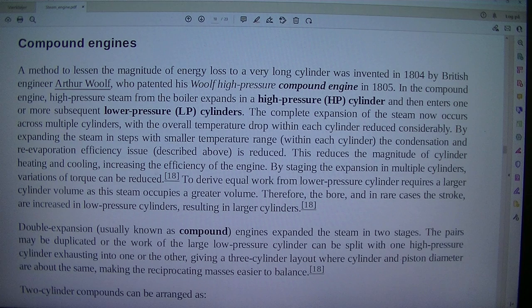Compound engines. A method to lessen the magnitude of energy loss to a very long cylinder was invented in 1804 by British engineer Arthur Wolfe, who patented his Wolfe high pressure compound engine in 1805. In the compound engine, high pressure steam from the boiler expands in a high pressure cylinder and then enters one or more subsequent lower pressure cylinders. The complete expansion of the steam now occurs across multiple cylinders, with the overall temperature drop within each cylinder reduced considerably. By expanding the steam in steps with smaller temperature range within each cylinder, the condensation and re-evaporation efficiency issue, described above, is reduced. This reduces the magnitude of cylinder heating and cooling, increasing the efficiency of the engine.